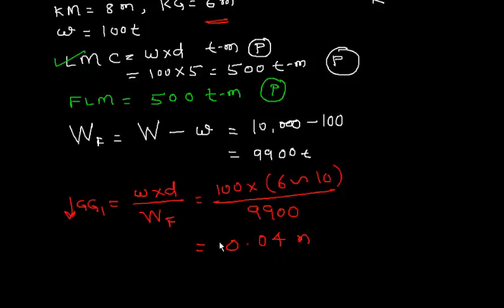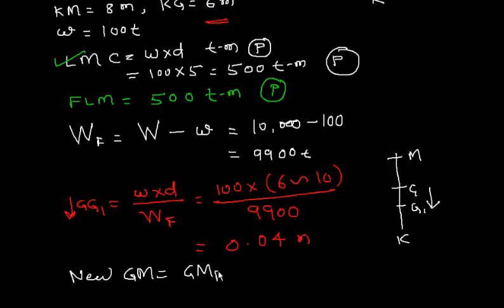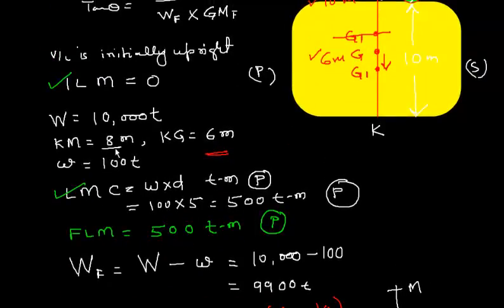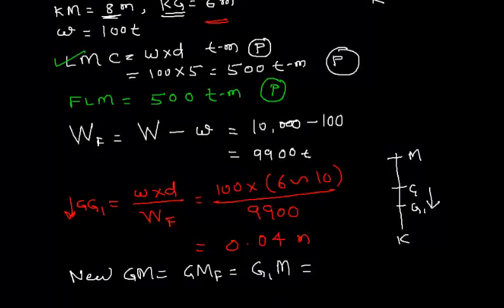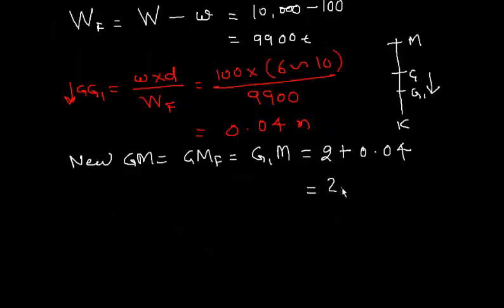Here, this was K, this was G, this was M. Suppose M has not changed and G is shifted downward G to G1. New GM, which is called GMF or GM final, is nothing but G1M. GM we know from the question: KM is 8 meters, KG is 6 meters, so GM is 2 meters. That is 2 meters plus 0.04, which gives me 2.04.